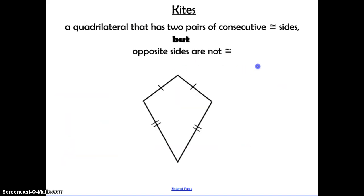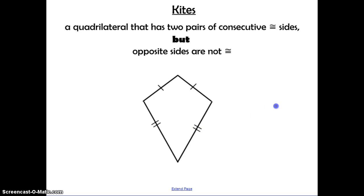Next, we're going to talk about kites. A kite is a quadrilateral that has two pairs of consecutive congruent sides, but the opposite sides are not congruent. Two pairs of sides next to each other are congruent, but we must specify that the opposite sides are not congruent — if they were, it would be a rhombus, and kites are different from rhombuses.